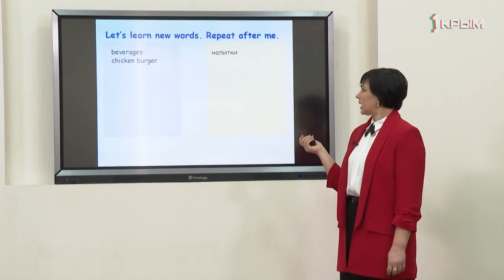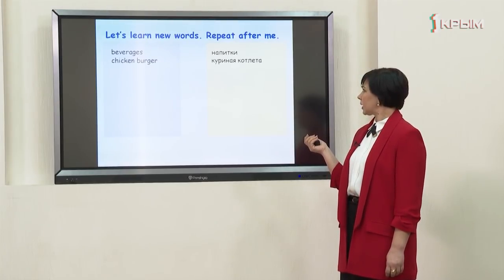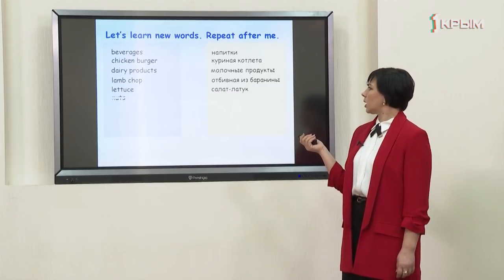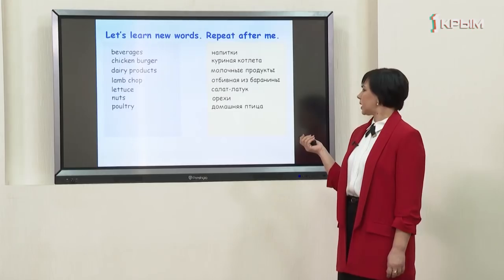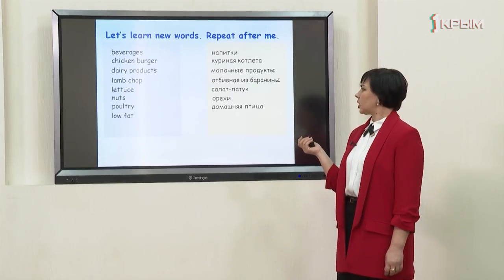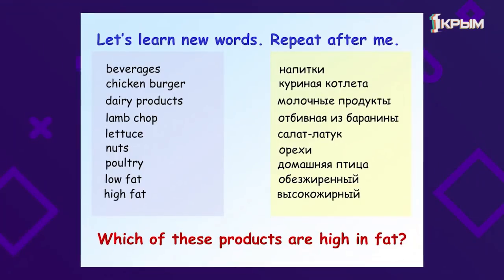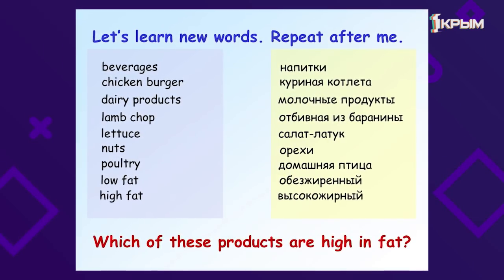Repeat after me: beverages — напитки, chicken burger — куриная котлета, dairy products — молочные продукты, lamb chop — отбивная из баранины, lettuce — салат латук, nuts — орехи, poultry — домашняя птица, low fat — обезжиренный, high fat — высокожирный. Now please look through the words and tell which of these products are high in fat.